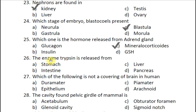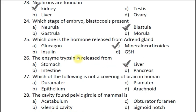Question twenty-six: The enzyme trypsin is released from — A stomach, B intestine, C liver, D pancreas. The correct answer given is C liver. It is produced in an inactive form called trypsinogen.